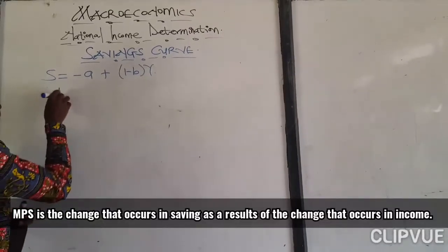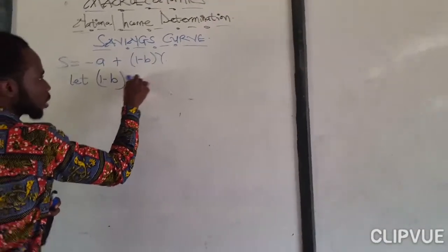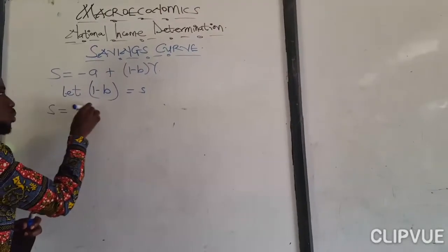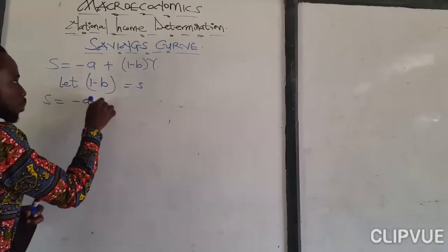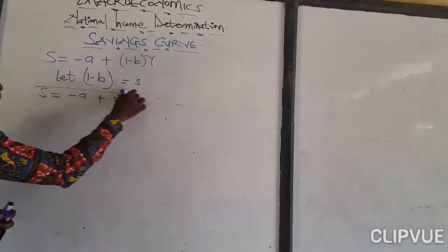So we can say that let (1-b) equal to s. So rewriting the savings function, you get S equal to minus a plus sY. So this is the savings function.